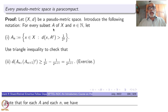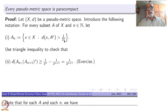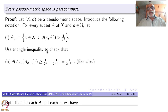Let us set up some notation. For every subset A of the pseudo-metric space and for each integer n, let An denote the set of all x in X such that the distance of x from the complement of A is bigger than 1 divided by 2 to the power n. A may be any set; you take the complement and the distance from it must be at least 1/2^n. These An are automatically subsets of A.